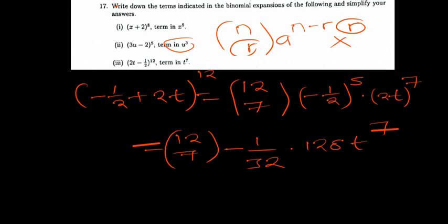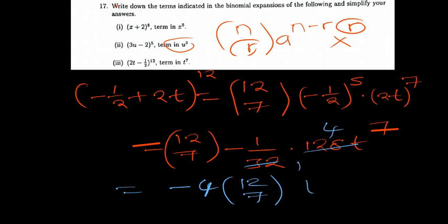Now 32 into 64 goes 2 times, and into 128 goes 4 times. So we end up with negative 4 times 12 choose 7 times t to the power 7. I'll leave the simplification of 12 choose 7 to you, but the term is negative 4 times 12 choose 7 times t to the power 7.